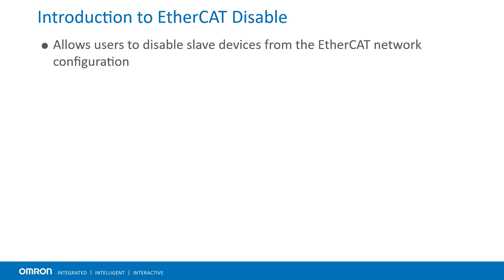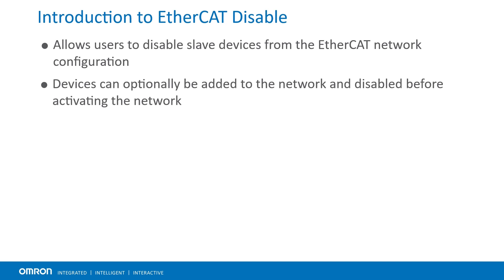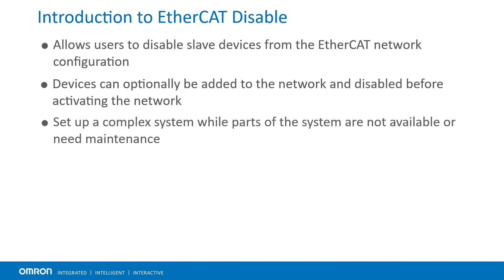The EtherCAT disable feature is designed to disable slave devices in the active configuration without affecting overall functionality. It is often required to operate the system without a perfect match between the EtherCAT bus configuration and the actively connected devices. Using the disable function, devices can optionally be added to the network and disabled during operation without causing an error on the EtherCAT network. This functionality makes it possible to set up a complex system while parts of the system are not available or need maintenance.